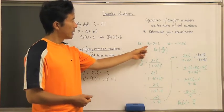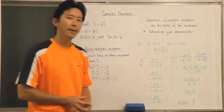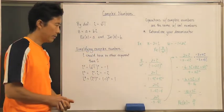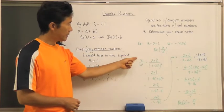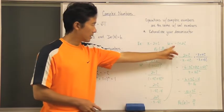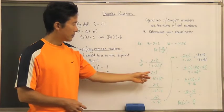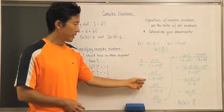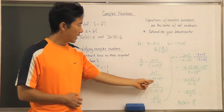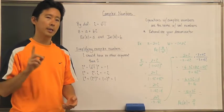Let's work through an example. Let z equal two plus i and w equal negative one plus two i. We want the real part of z over w squared. So z over w squared is two plus i over the quantity negative one plus two i, squared. We expand w squared using FOIL, getting one minus four i plus four i squared.